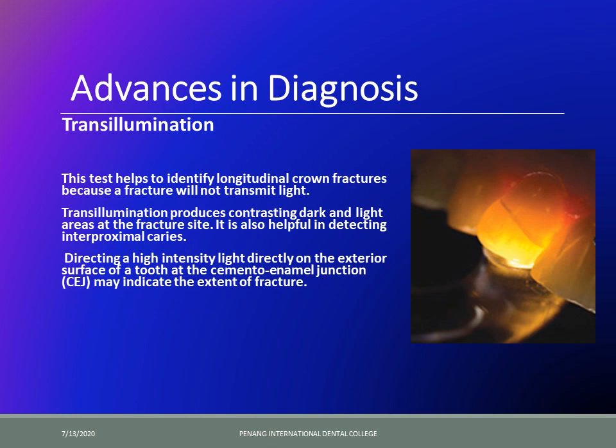Coming to advances in the field of diagnosis — I'm sure you are all aware of transillumination, which has been covered in year four. This test helps to identify crown fractures because when you shine a very bright light through the tooth, the fracture line will not be able to transmit this light, so you will see contrasting dark and light areas at the fracture site, as is very evidently clear in the picture on the right. It can also be helpful in detecting interproximal caries.